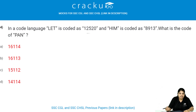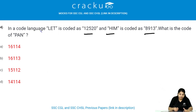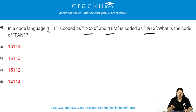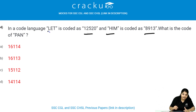Let us see the next question. In a code language, LET is coded as 12520, HIM is coded as 8913. What is the code of PAN? Most questions like this use the numeric value of the alphabet, or the preceding or succeeding value. You need to know the numeric value of all the alphabets to solve these.